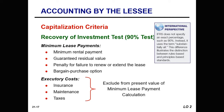Under the capital lease method, the lessee treats the lease transaction as if an asset is being purchased over time on an installment basis. For a capital lease, the lessee records an asset and liability at the lower of the present value of the minimum lease payments during the term of the lease, or the fair value of the leased asset at the inception of the lease. In determining the present value of the minimum lease payments, there are three important factors: the minimum lease payments, the executory costs, and the discount rates.